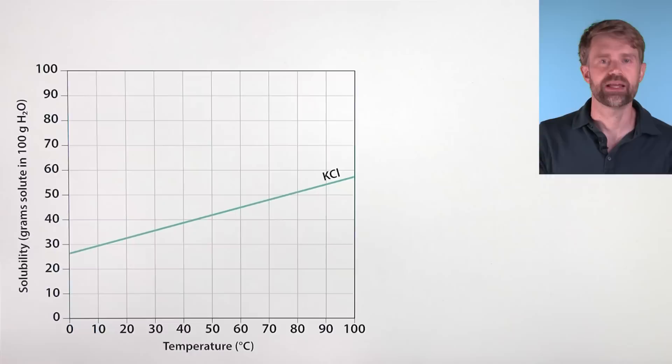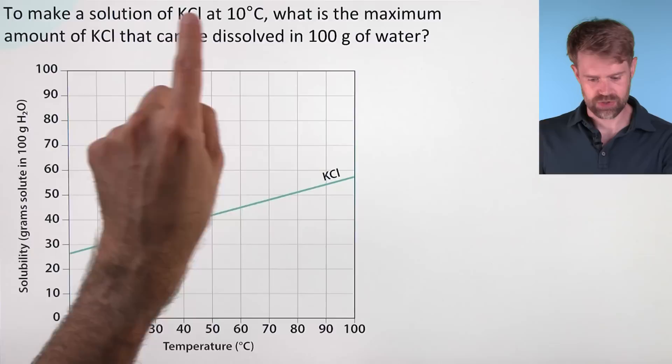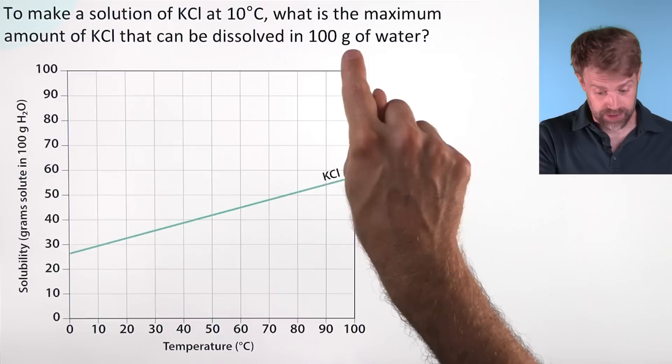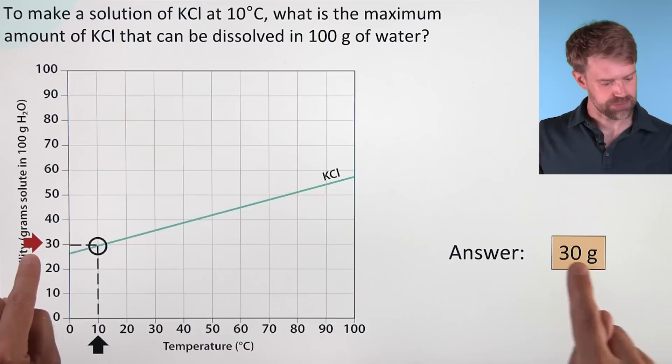To make a solution of KCl at 10 degrees Celsius, what's the maximum amount of KCl that can be dissolved in 100 grams of water? We're looking for the maximum amount of KCl, so it sounds like we're looking for the solubility in 100 grams of water. We start at 10 degrees Celsius, go up to the curve, across to the y-axis, and we get 30 grams. 30 grams can dissolve in 100 grams of water.